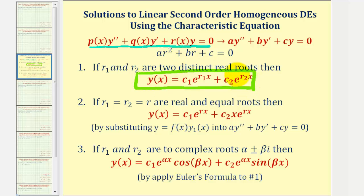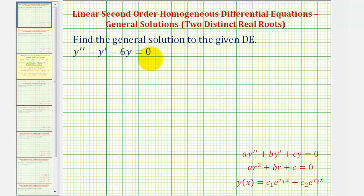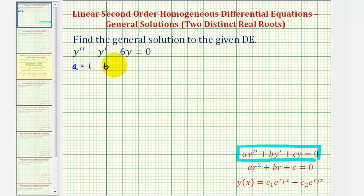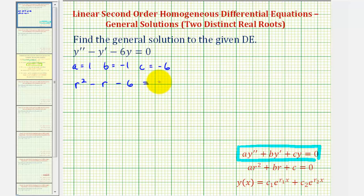Let's take a look at our first example. Notice the given differential equation fits this form, so we can find the general solution using a characteristic equation. The coefficient of y double prime, a, equals one; b, the coefficient of y prime, is negative one; and c, the coefficient of y, equals negative six. So the characteristic equation would be r squared minus r minus six equals zero.